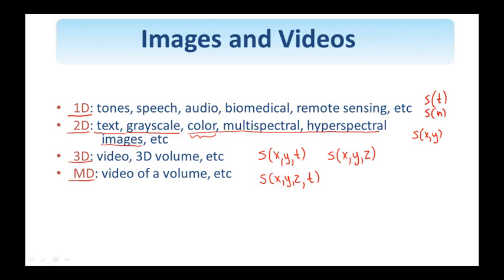Some of the tools we use to describe signals carry over from 1D to 2D to multi-dimensional — it's a straightforward extension. One just adds one more variable and everything remains the same in some sense. On the other hand, there are certain results that hold true for one-dimensional signals but cannot be generalized for higher-dimensional signals. Images and videos are clearly the focus of this class, and images are two-dimensional signals but can also be treated as three-dimensional when we talk about multispectral and hyperspectral images, while video is a three-dimensional signal.